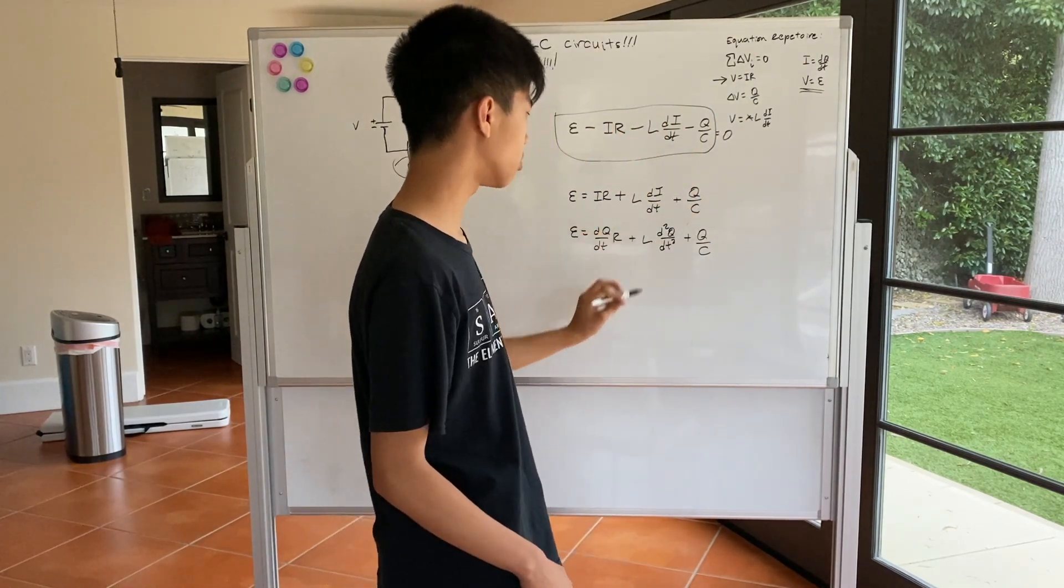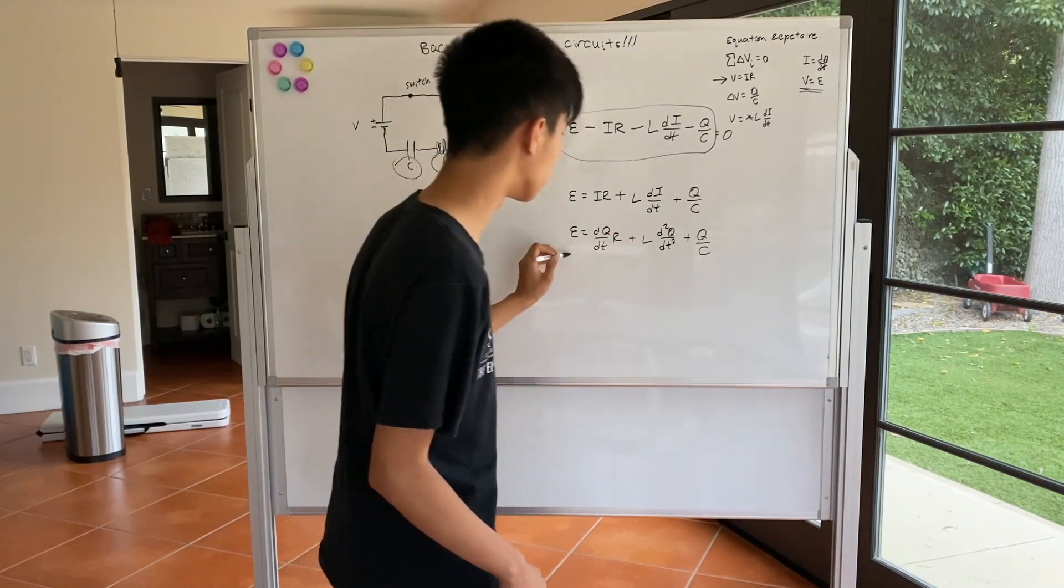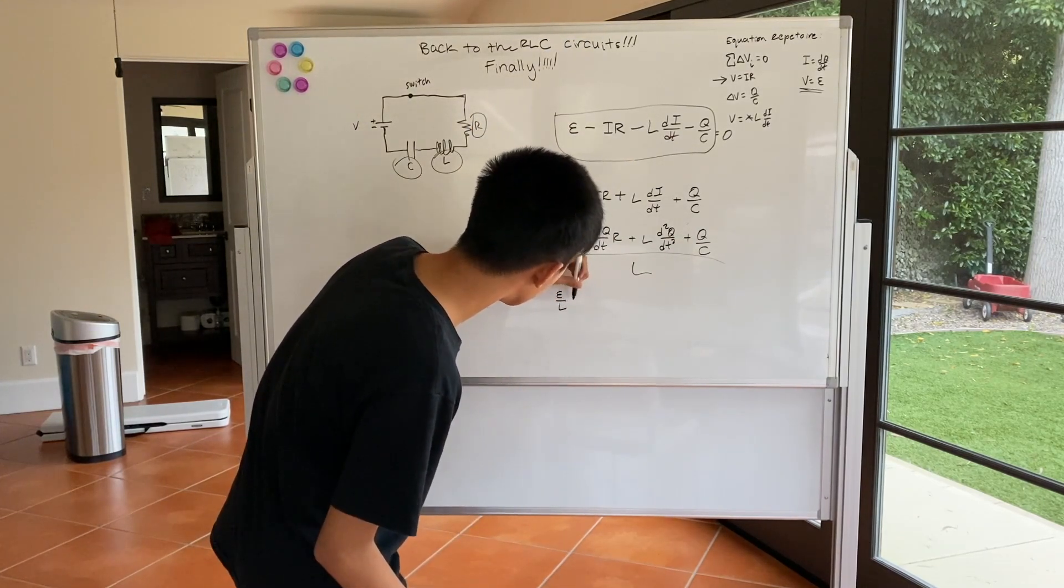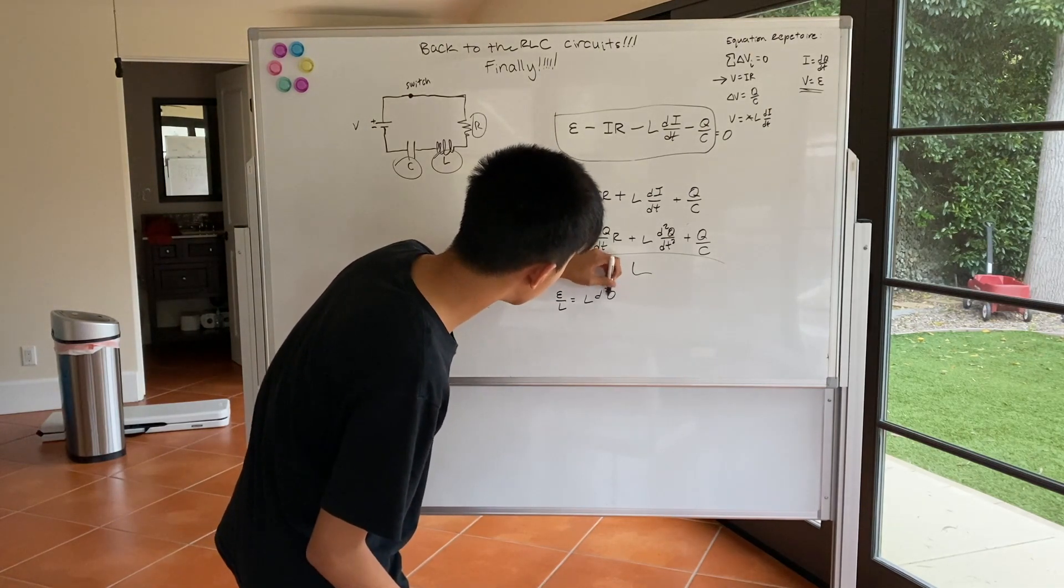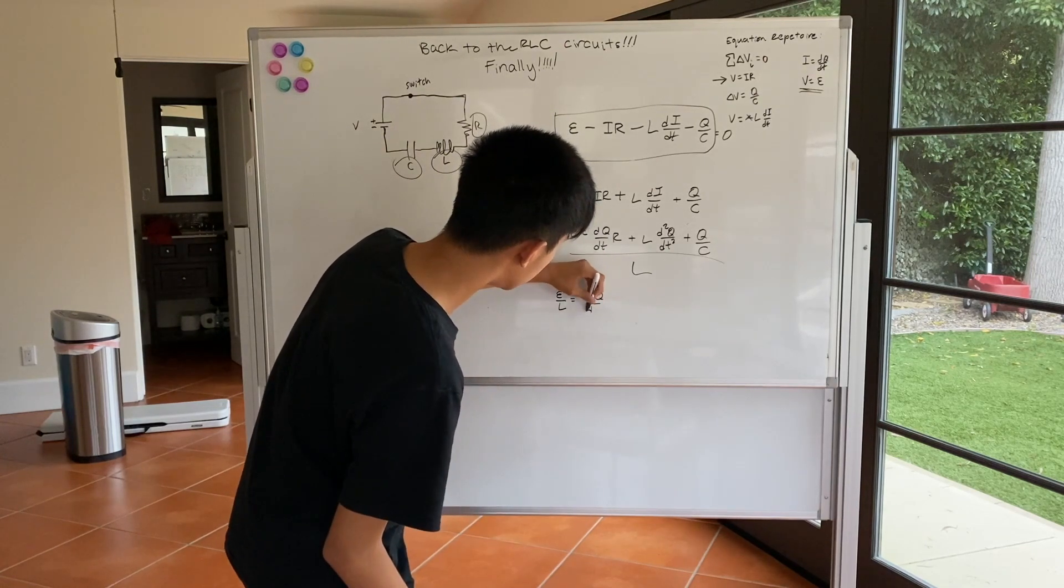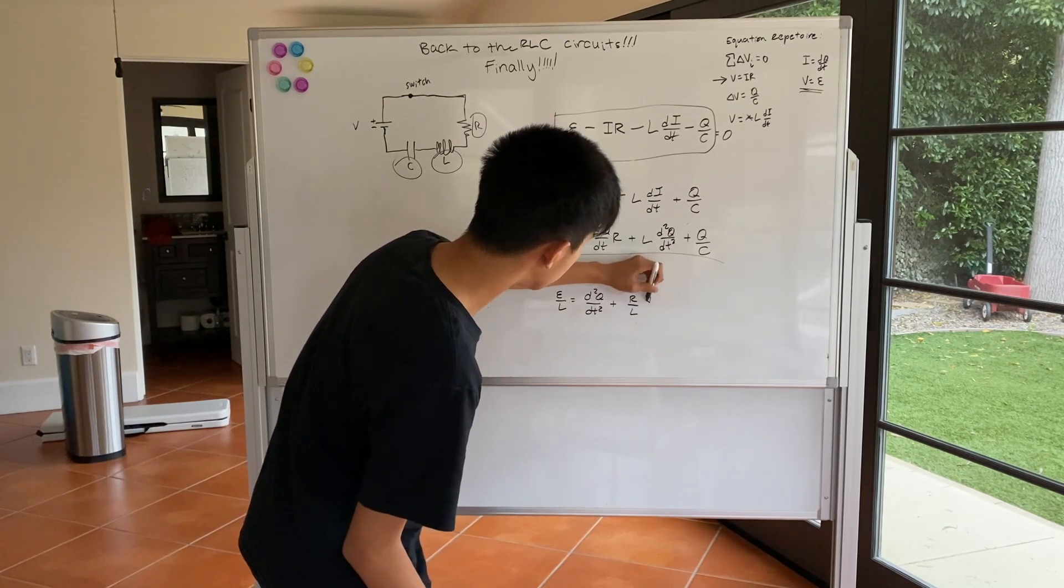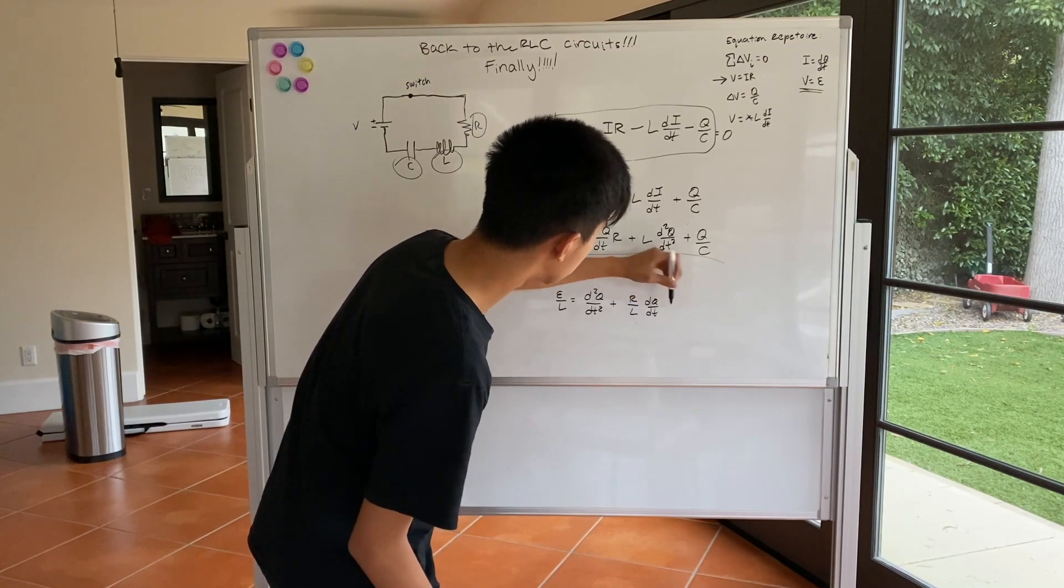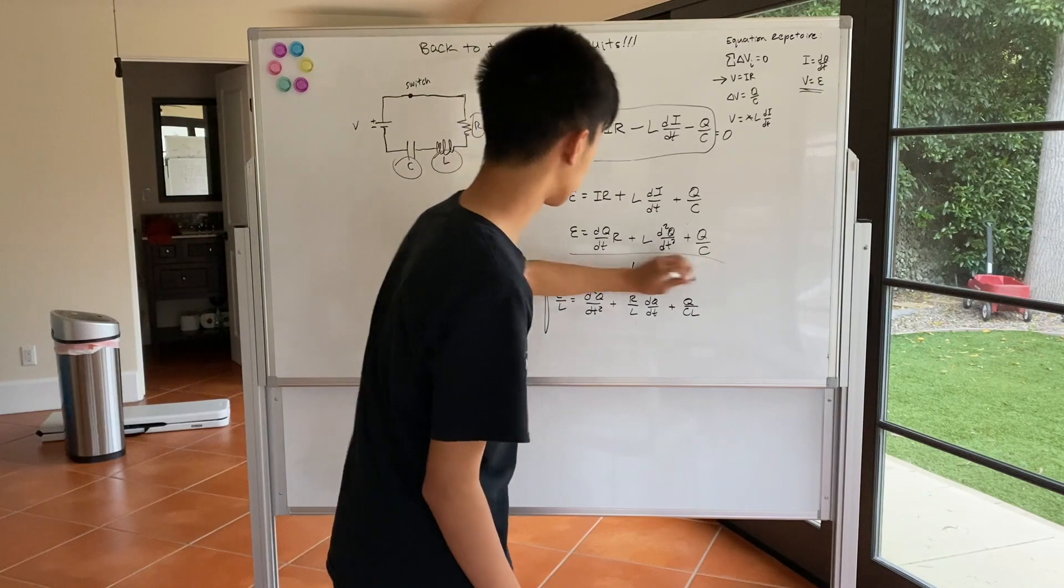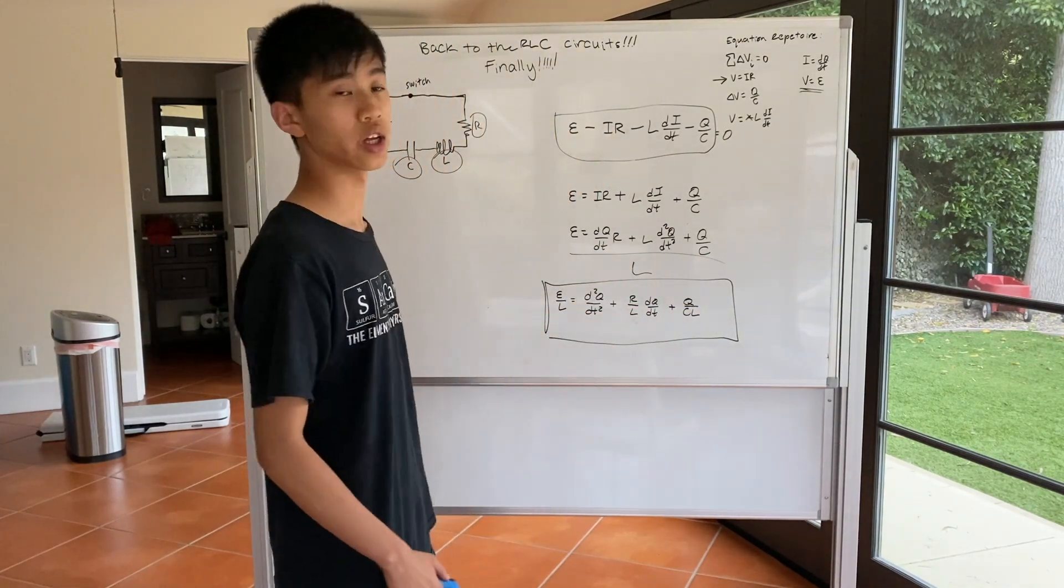And then we always want to make sure that the highest order of term has no coefficients, so we divide everything by L. So we end up with epsilon over L equals to, d squared Q over dt squared, plus R over L dQ dt plus Q over C L. And that is the equation that this entire video has built up to.